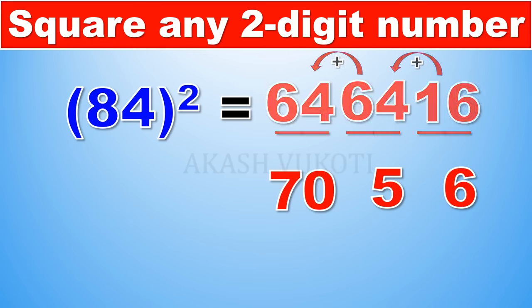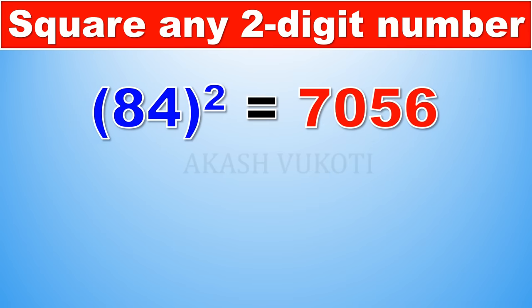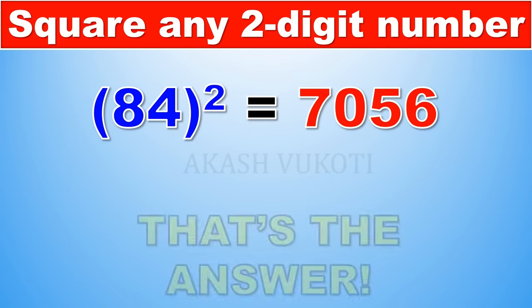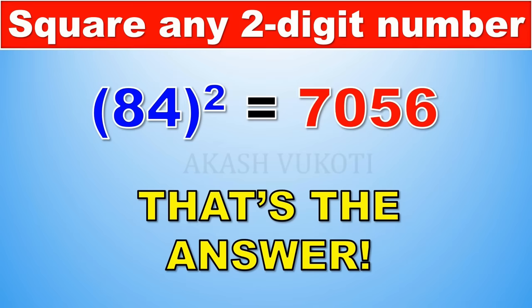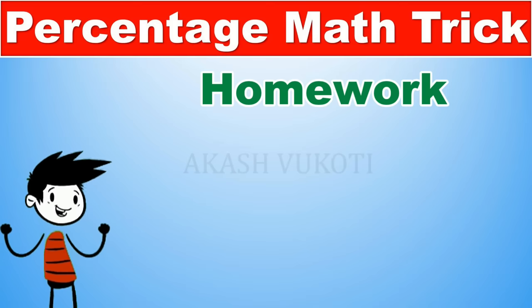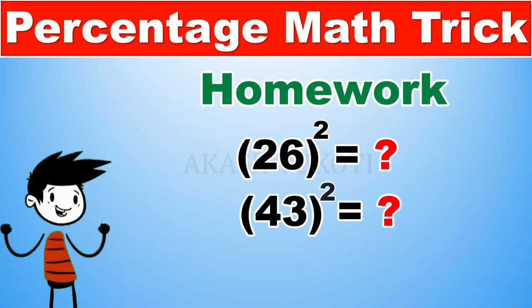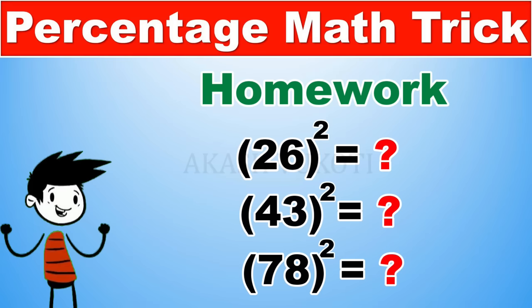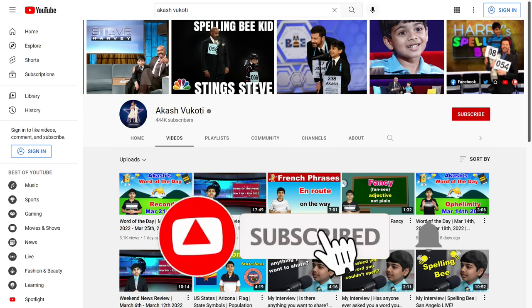So 84 squared equals 7056. Now that you're fully acquainted with this trick, it's homework time — try to figure out the squares of 26, 43, and 78. Comment your answers below; the answers will also be in the description. Thanks so much for watching — if you like my videos, subscribe and click the notification bell for more. Love you, Akash!